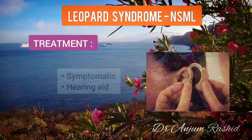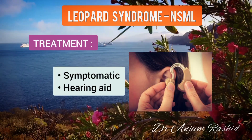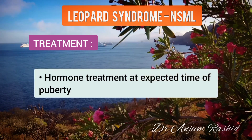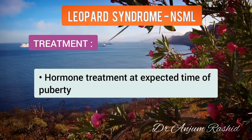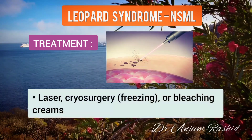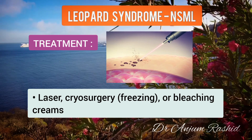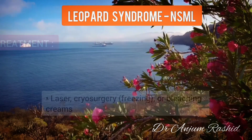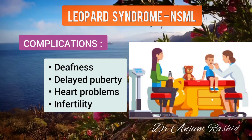Additional diagnostic testing includes removing a small amount of skin for examination, that is, a skin biopsy. Symptoms are treated as appropriate. A hearing aid may be needed. Hormone treatment may be necessary at the expected time of puberty to cause normal changes to occur. Laser or cryo surgery or bleaching creams may help lighten some of the brown spots on the skin.